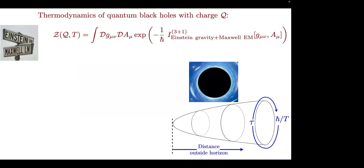A black hole is a solution of Einstein's equations with a horizon. I'm going to look at a very particular type of black hole — any black hole that has a net charge Q. So in the center of the black hole, there's some matter and charge of some mass M and charge Q.